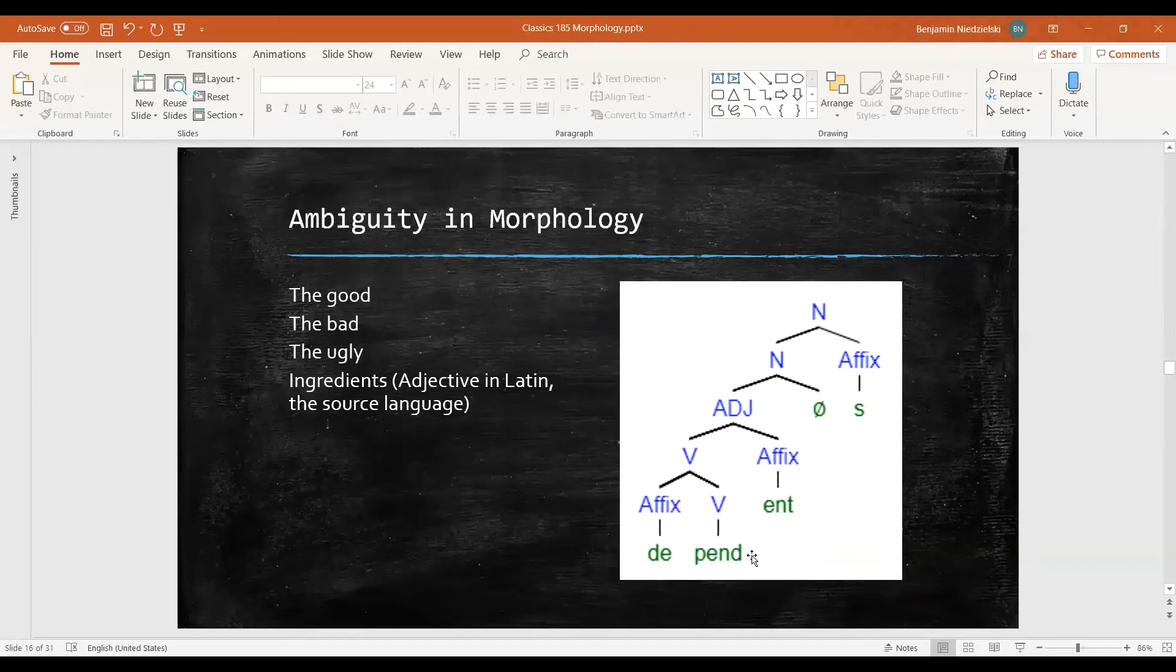Well, let's think about this tree here on the right. We can create a plural noun dependents. So we can take our noun dependent and add a suffix of s. A noun plus the suffix s makes a plural noun.